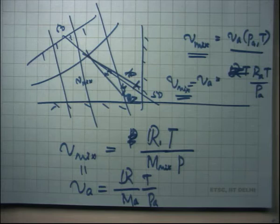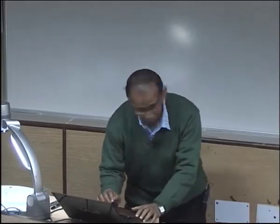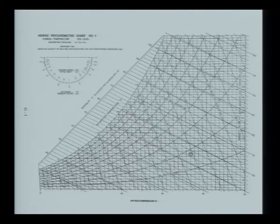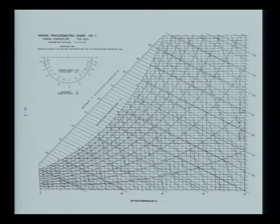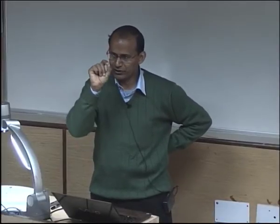Regarding the difference between constant enthalpy lines and constant WBT lines: if you look at a pair of such lines close together, you can see they diverge slightly — the angle between them is about half a degree to one degree. Visually, if you look at them separately they appear almost parallel, but placed side by side you can see the small divergence. This small angle arises because the hF value is so small compared to H1 and H2 that the term (ω2 − ω1)·hF contributes only a tiny change to the enthalpy.